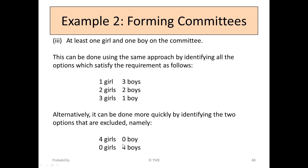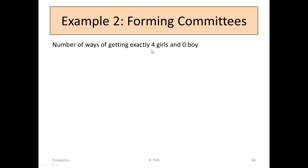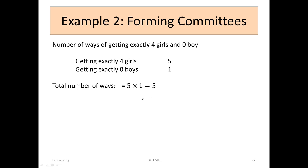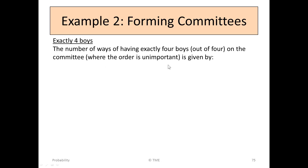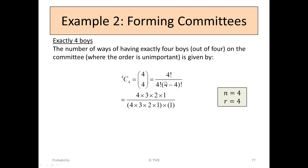Starting with 4 girls and no boys: getting exactly 4 girls gives 5 ways, and getting no boys gives 1 way, so the total is 5. Now looking at exactly 4 boys: if we pick all 4 boys, there is really only one way. Using the formula, 4C4 is 4 factorial over 4 factorial times 0 factorial — they cancel and we get 1. So there is only one way of getting all 4 boys.